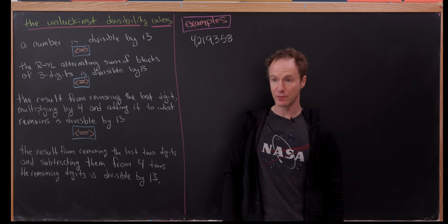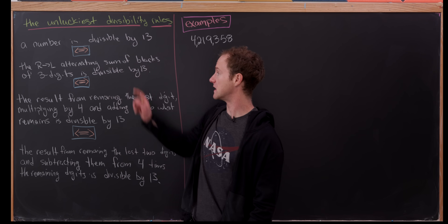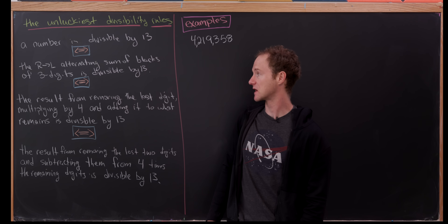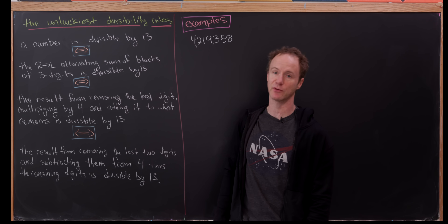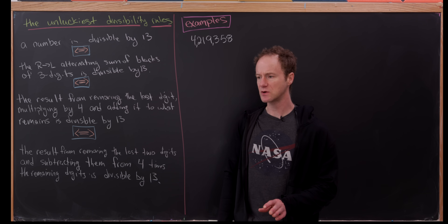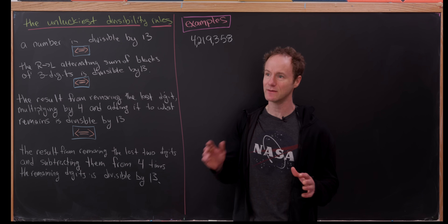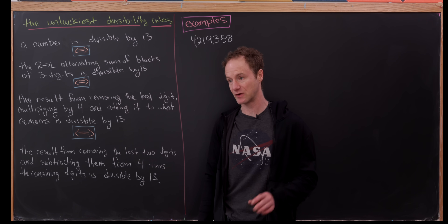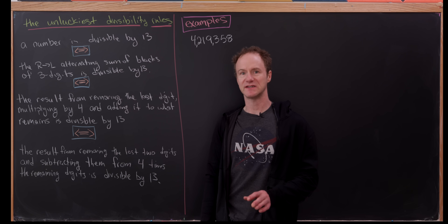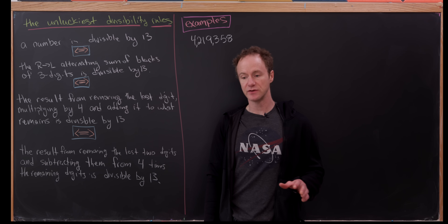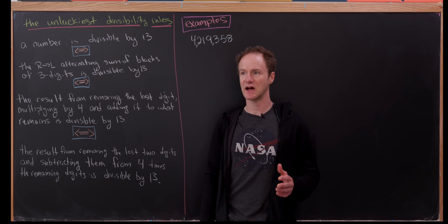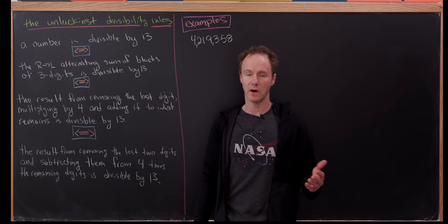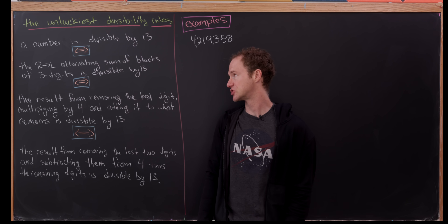A number is divisible by 13 if and only if the right-to-left alternating sum of blocks of three digits is divisible by 13. This one looks fairly similar to the divisibility by 11 rule, where you take the alternating sum of digits. Here you take an alternating sum, but not just of single digits — it's of blocks of three digits, and you're required to start at the right.